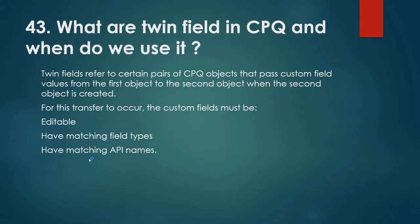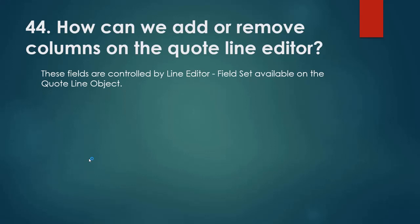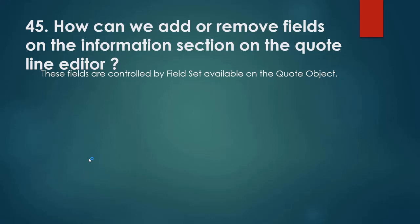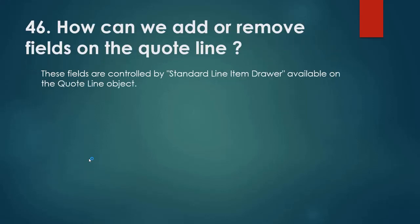What are twin fields in CPQ and when do we use them? Twin fields refer to certain pairs of CPQ objects that pass custom field values from the first object to the second object when the second object is created. For this transfer to occur, the custom field must be editable and have matching field types and matching API names. How can we add or remove columns on the quote line editor? These fields are controlled by the line editor — the other line editor fields are available on the quote line object. How can we add or remove fields on the information section of the line editor? These fields are controlled by fields available on the quote object. How can we add or remove fields on the quote line? These are controlled by the standard line item drawer available on the quote line object.